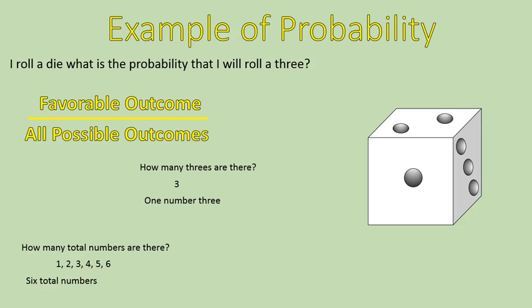So there is one number 3 on this die. How many total numbers are there? 1, 2, 3, 4, 5, 6. Six total numbers. So the probability that I'm going to roll a 3 is 1 out of 6. And sometimes that's complicated because the number 3 makes you think that the number 3 needs to be in the answer. But you're looking for how many number 3's there are, not looking at the number 3 as a number.